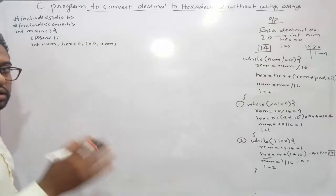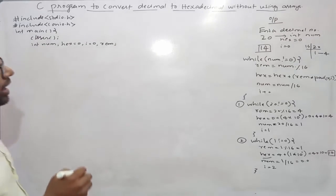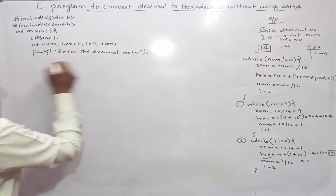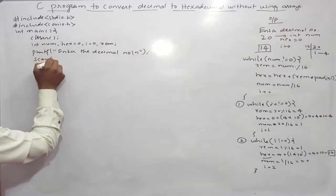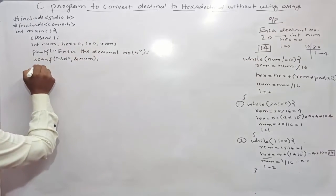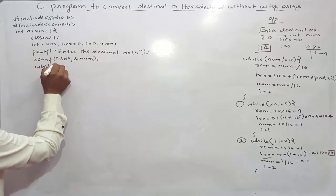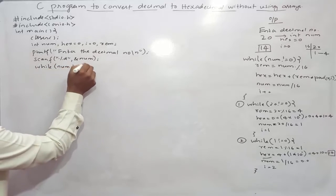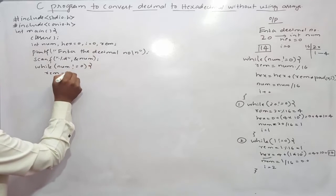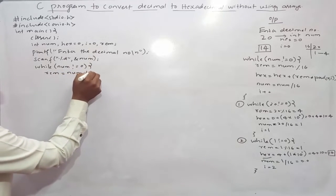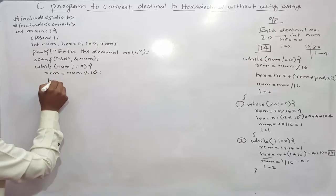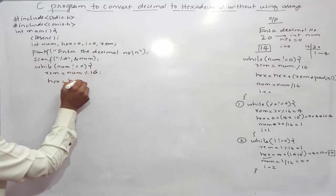Then I need to initialize i with 0, then remainder. These are the variables required. Now I need to display a message to the user: enter decimal number, and I need to read that number num. Now I need to write while num is not equal to 0.